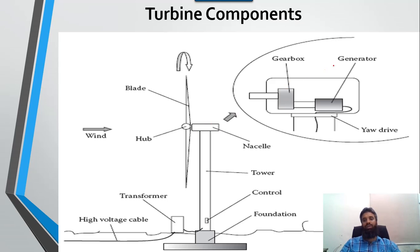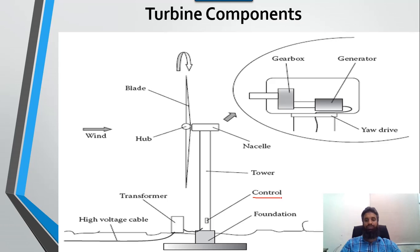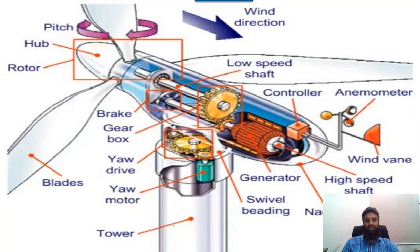The hub is the point where the multiple blades are connected. From the hub there is an enclosed body which is known as the nacelle. Inside the nacelle there is a gearbox, the generator, and a special mechanism called the yaw mechanism. This complete structure is supported by a tower, and below the tower there is a control circuitry which controls the frequency and output voltage. Control signals move toward the gearbox, which adjusts the gear ratio according to the requirement. The output is fed to a transformer, which steps up the output voltage and feeds it to the high voltage transmission line.